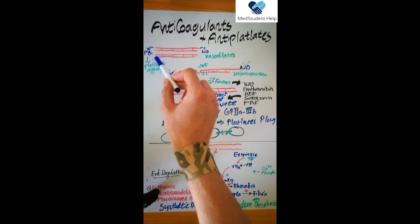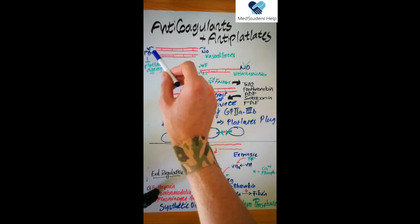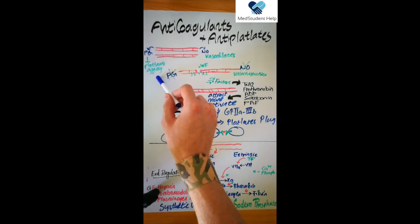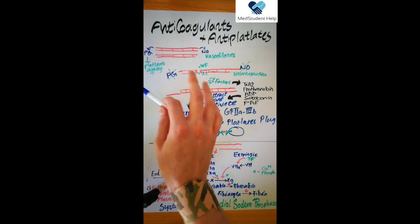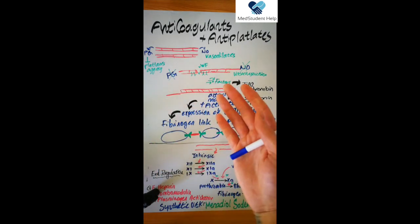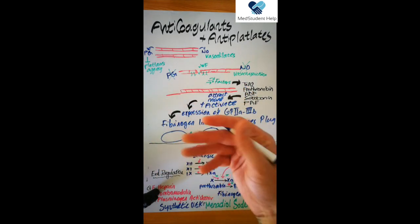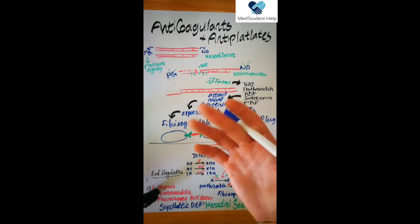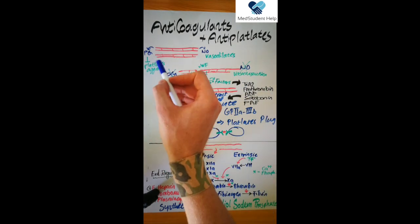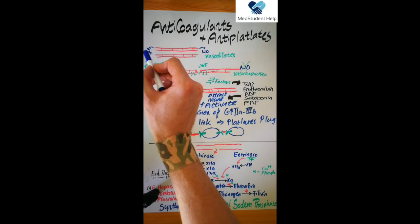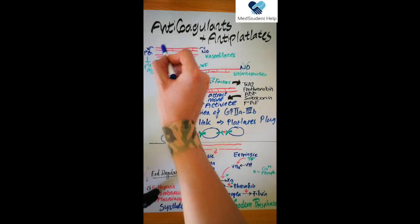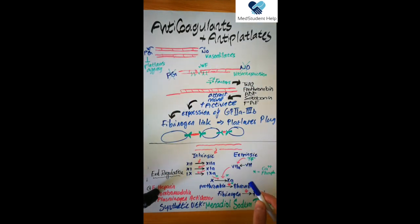On the other hand, producing prostaglandins is going to inhibit the platelets from aggregating. So we protect our vascular system from thrombus formation by inhibiting platelet aggregation through prostaglandins produced from the intact endothelia.